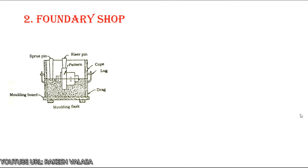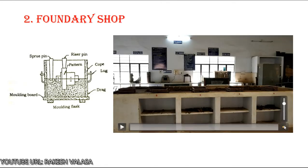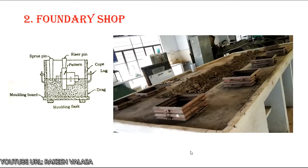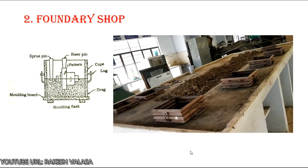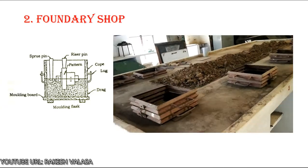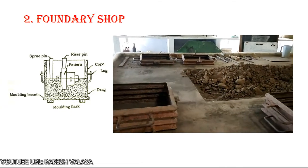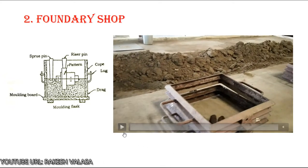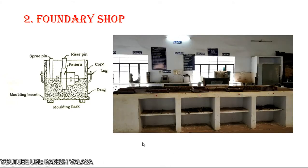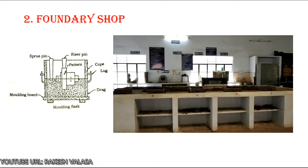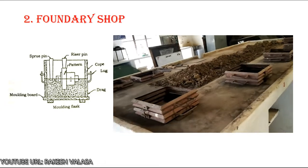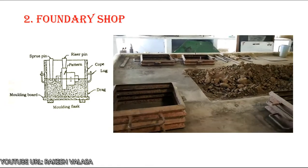The next one is foundry. Foundry is also known as the casting process. The casting process is one of the earliest metal shaping techniques known to human beings. It involves pouring molten metal into a refractory mold cavity and allowing it to solidify. The solidified object is taken out from the mold either by breaking or removing the mold parts, and this solidified object is called a casting.